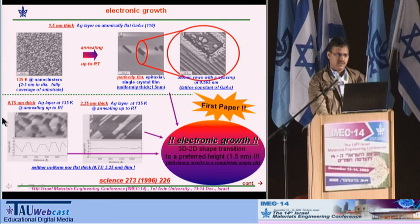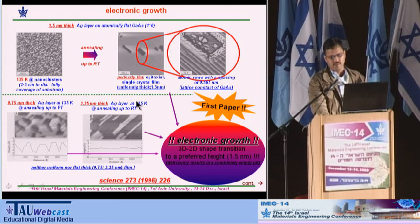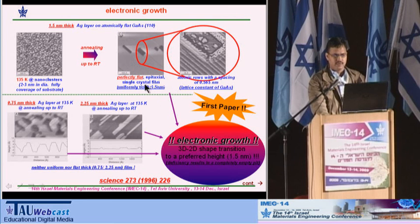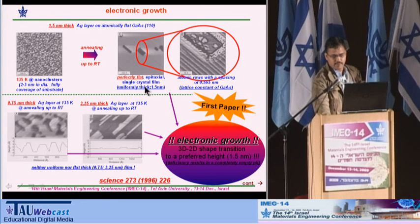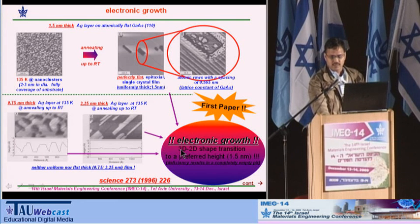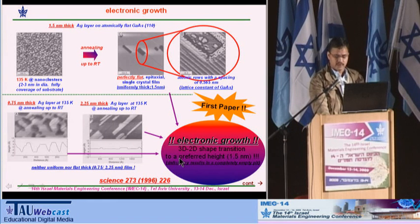In addition, they made two more depositions — one with lower thickness and one with higher thickness — and interestingly, neither of them showed a perfectly flat epitaxial single crystal film. So from their coverage-dependent experiment, they demonstrated very nicely a shape transition from 3-dimensional to 2-dimensional with a preferred height of 1.5 nanometer.